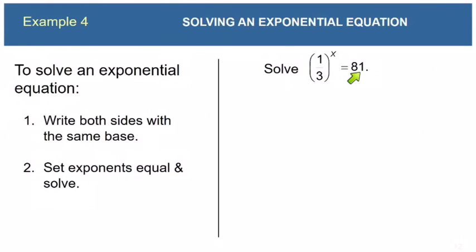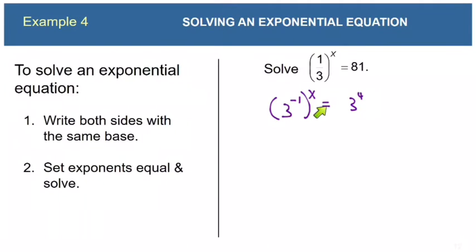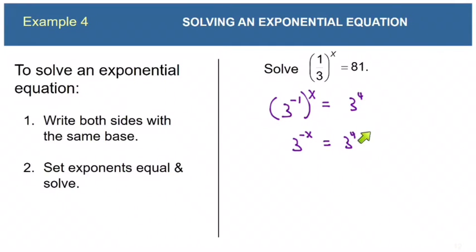Let's look at this example: (1/3)^x = 81. Notice that both bases are powers of 3 — 1/3 is 3^(-1) and 81 is 3^4. So rewriting with base 3: (3^(-1))^x = 3^4, which by the power rule gives 3^(-x) = 3^4. Since the bases are the same, the exponents must be equal. So -x = 4, which means x = -4.